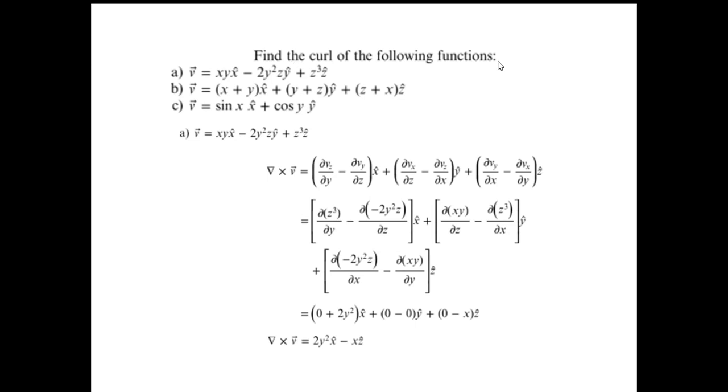Then, third is find the curl. Curl is, v is xy x cap plus 2y squared z y cap and z cube z cap. Then, you have one more function x plus y x cap, y plus z y cap, and z plus x z cap and sin x x cap cos y y cap. First is again this is a vector function. Now, what you need to calculate is del cross v and then substituting, you can very easily find out what is going to be 0, what is not going to be 0 and you get del cross v is equal to 2y squared x cap plus x z cap. I will request all the students to solve it on your own and these are just the guidelines.